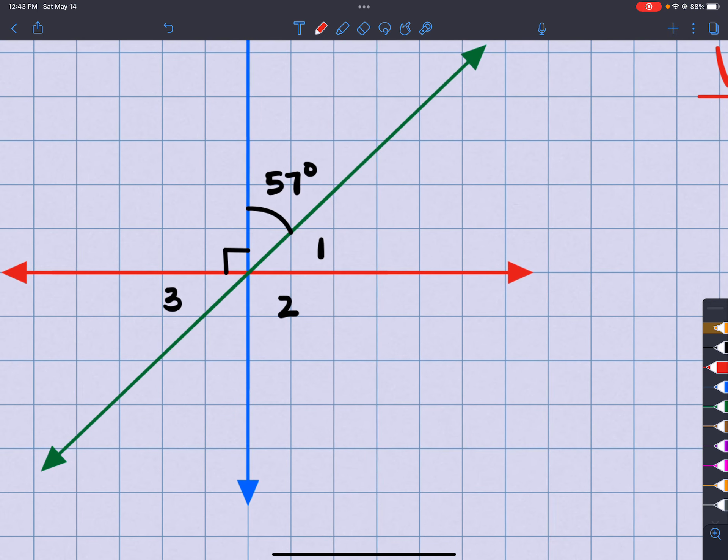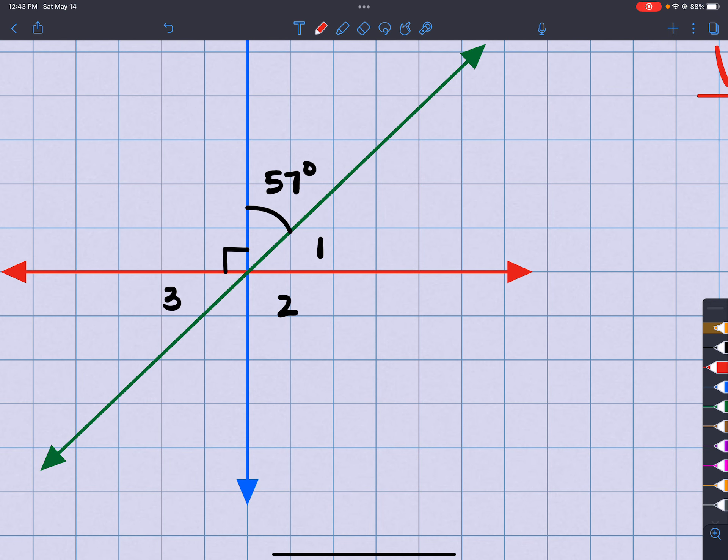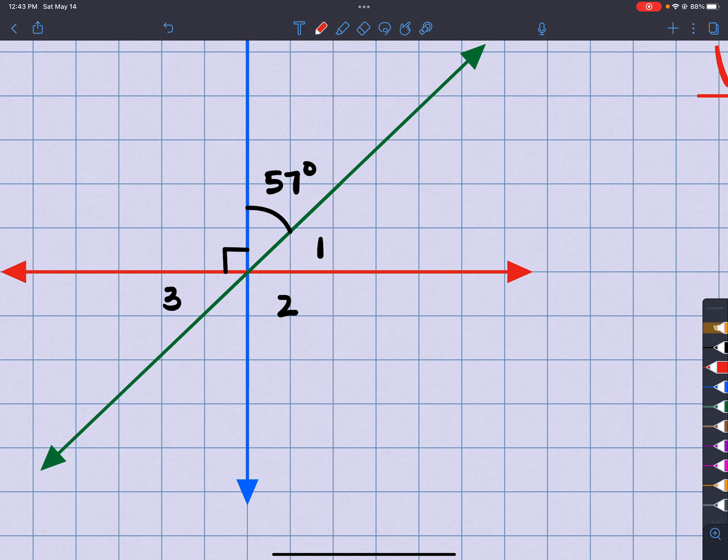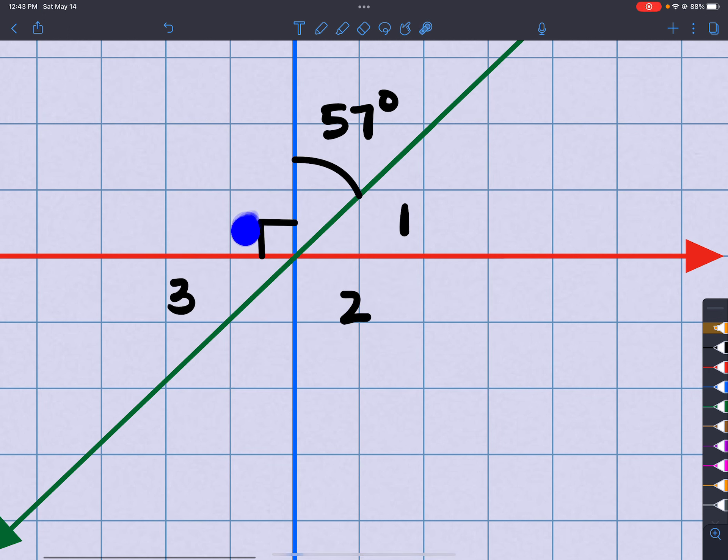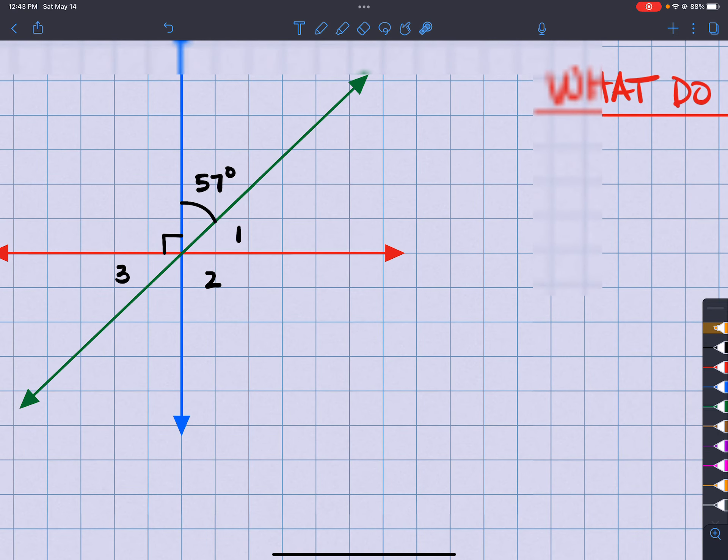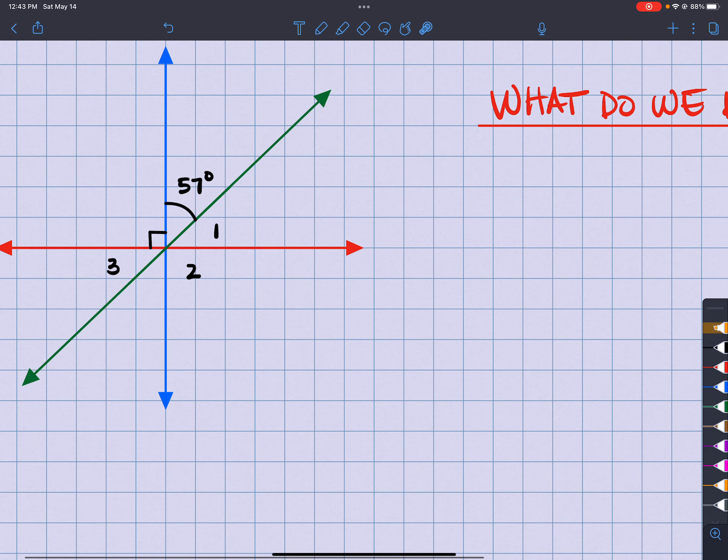So if we look at this, what's given is that I have this angle that's 57 degrees. And I know that this piece right here tells me that this is perpendicular. That means the blue line and the red line intersect each other at a right angle. So that's gonna be 90 degrees.